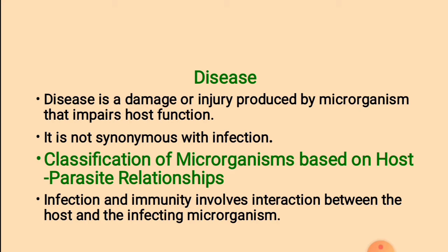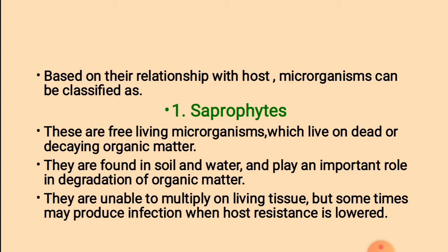Classification of microorganisms based on host-parasite relationship. Infection and immunity involves interaction between the host and the infecting microorganism. Based on their relationship with the host, microorganisms can be classified as: 1. Saprophytes. Saprophytes are free-living microorganisms which live on dead or decaying organic matter. They are found in soil and water and play an important role in the degradation of organic matter. They are unable to multiply on living tissue, but sometimes may produce infection when host resistance is lowered.